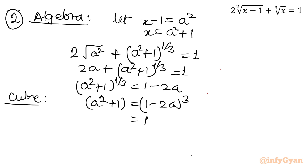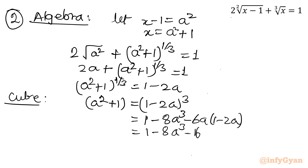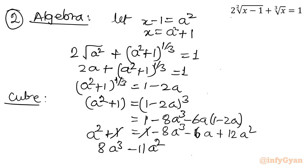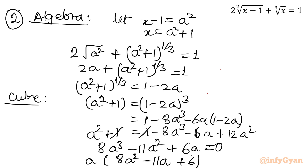Expanding using (a − b)³ = a³ − b³ − 3ab(a − b): the right-hand side expands to 1 − 8a³ − 6a + 12a². Taking all terms to the left and cancelling the 1 on both sides gives: 8a³ − 11a² + 6a = 0.